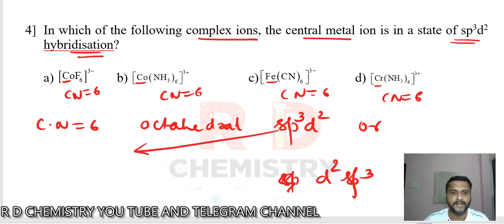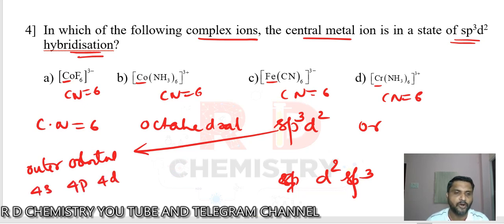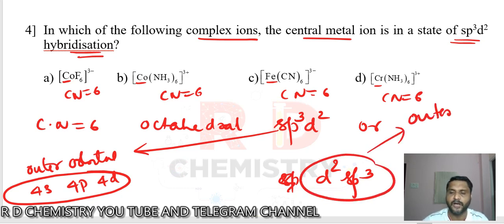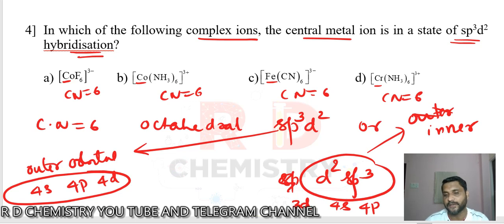If it is SP3D2 hybridization, it is an outer orbital complex, meaning it uses the 4S, 4P, and 4D orbitals — all from the outermost shell (NS, NP, ND). When it is D2SP3, it is an inner orbital complex: it uses 3D orbitals from the inner shell together with 4S and 4P from the outer shell, involving both the third and fourth shells.